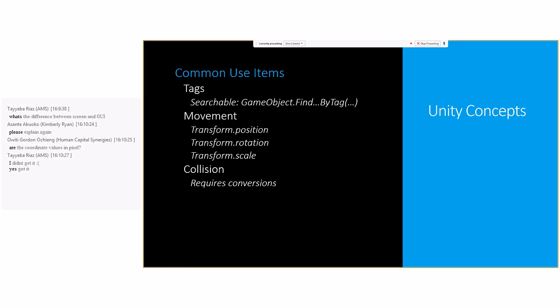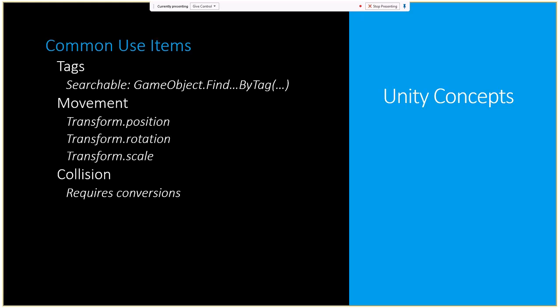When building actual games, we can tag objects so that when searching for different objects we use GameObject.FindGameObjectWithTag or get multiple objects by tag. When moving things, there are three important properties: under a game object's transform there's position, rotation, and scale. As an added note, if we do collisions we're probably going to need to do conversions between different coordinate systems.